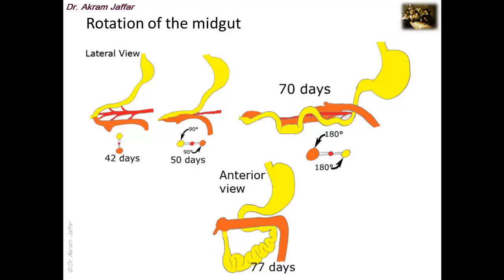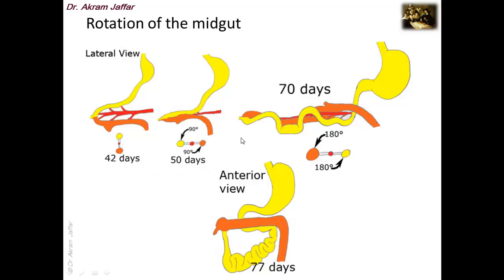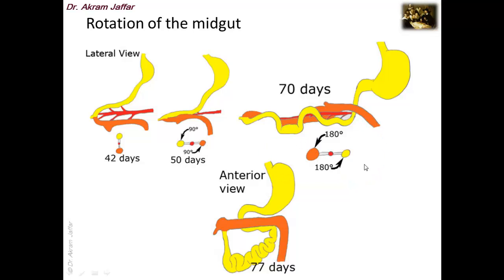During midgut rotation, the midgut rotates 90 degrees anticlockwise during herniation, and then when the physiological hernia is reduced and returns to the abdominal cavity, there is an additional 180 degrees anticlockwise rotation, resulting in a total rotation of 270 degrees anticlockwise.